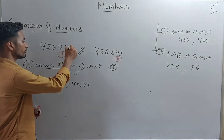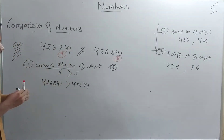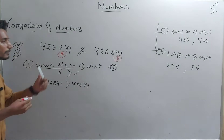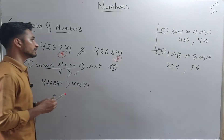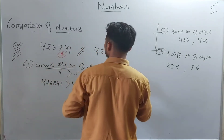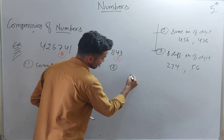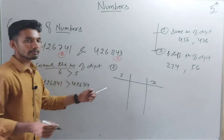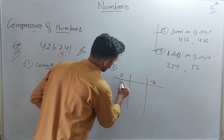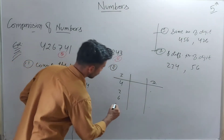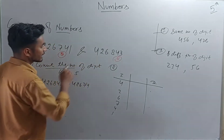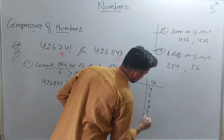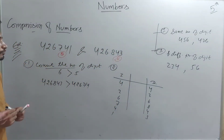Now if we place a one in front of 42674, this number also contains six digits, and the second number also contains six digits. Then we will compare them digit by digit. Let's start with the comparison for the same number of digits. We draw a chart and place digits one by one: for 426741 we have 4, 2, 6, 7, 4, 1, and for 426843 we have 4, 2, 6, 8, 4, 3.